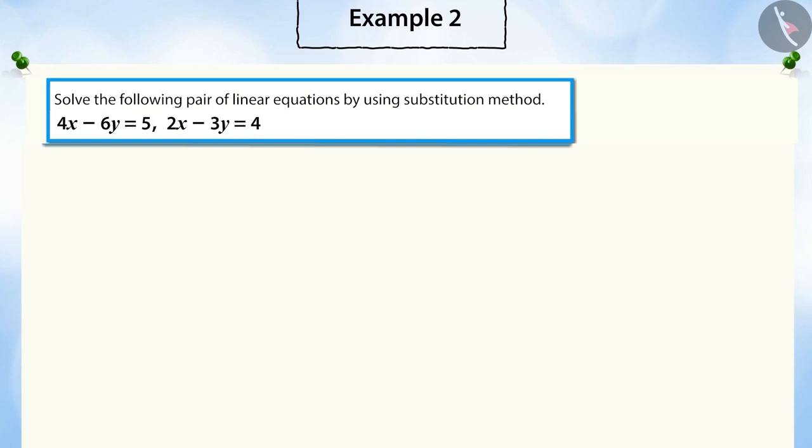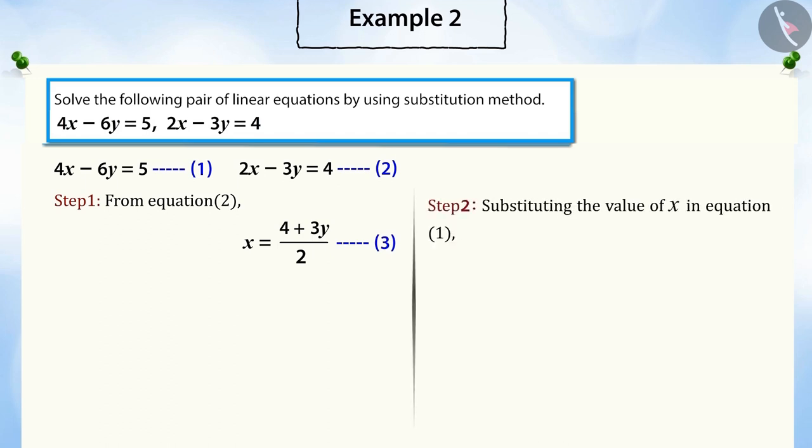Let's look at another example. Solve the following pair of linear equations by using the substitution method. First of all, let's take equation 2 and write x in terms of y. Now, substitute this value of x in equation 1. And on solving, we get an incorrect equation without a variable.